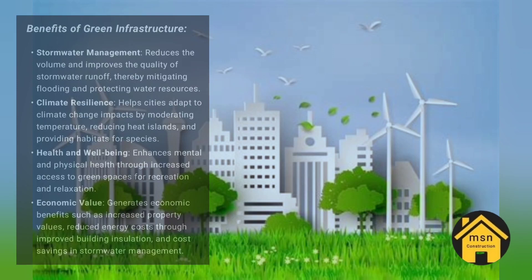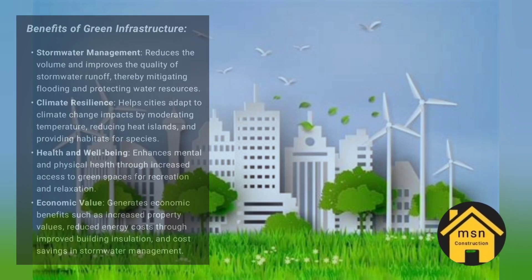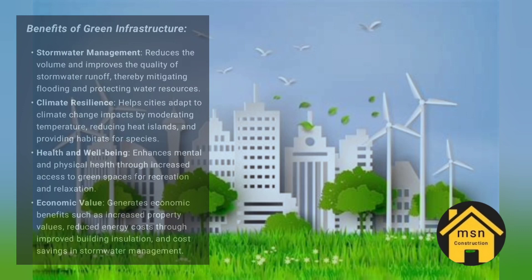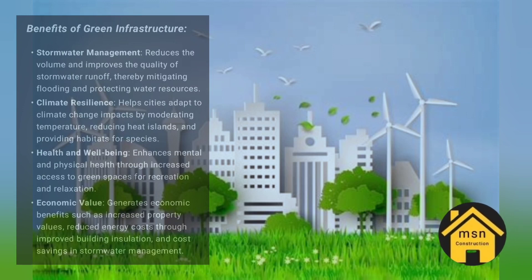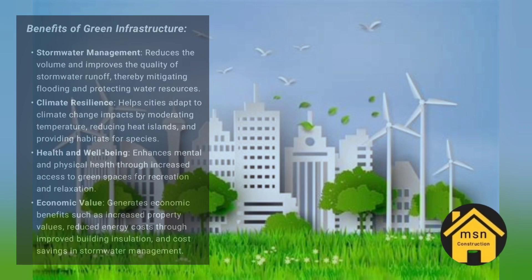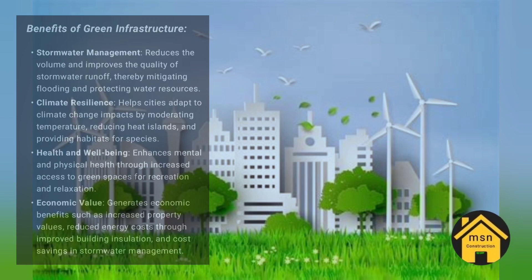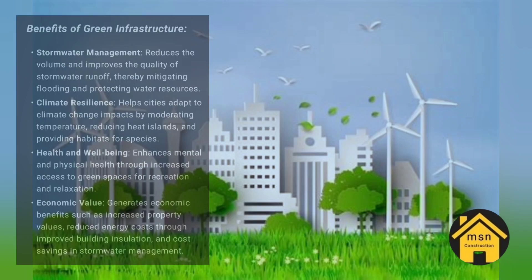Community gardens — allotment gardens and shared green spaces — promote urban agriculture, community engagement, and food security. Living shorelines use natural shoreline stabilization techniques with vegetation and natural materials to reduce erosion, protect coastal habitats, and enhance resilience to sea level rise.